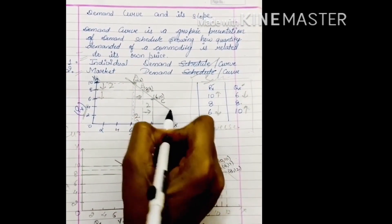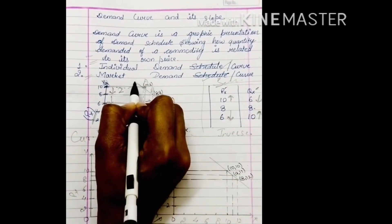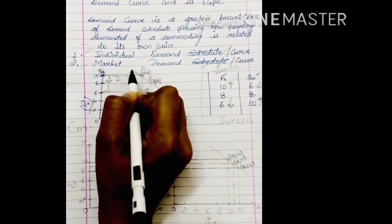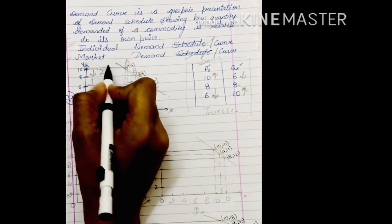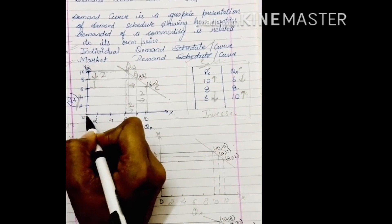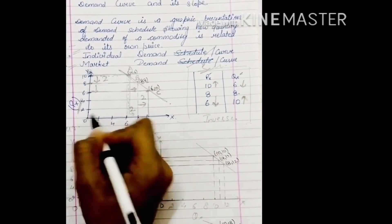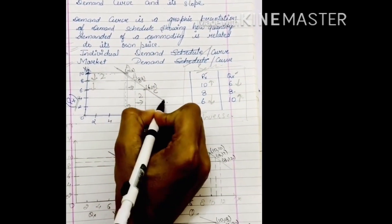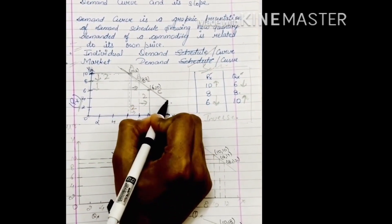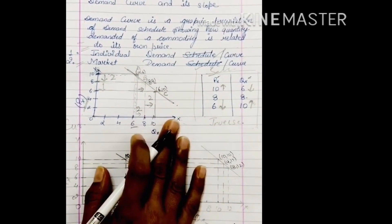We can see that our demand curve is downward sloping from the origin — it falls from upper left to lower right. This is a downward sloping demand curve. Clear students?